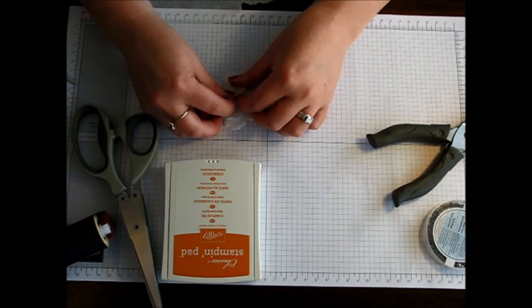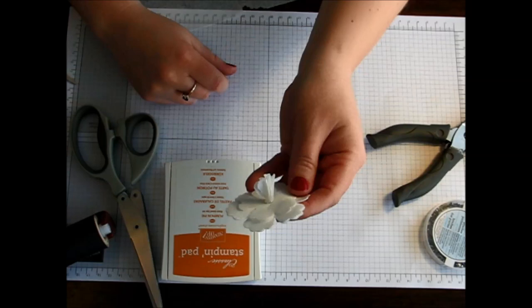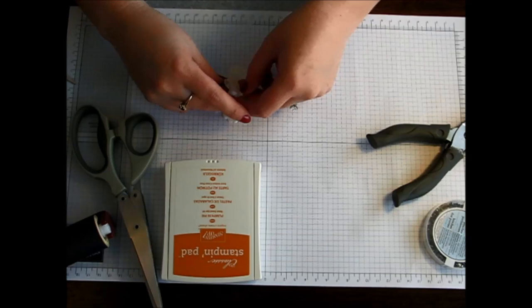All you do to get it to scrunch up is you just separate each layer, pull it up and scrunch it around that top brad. You can see there how I've scrunched up that first layer.